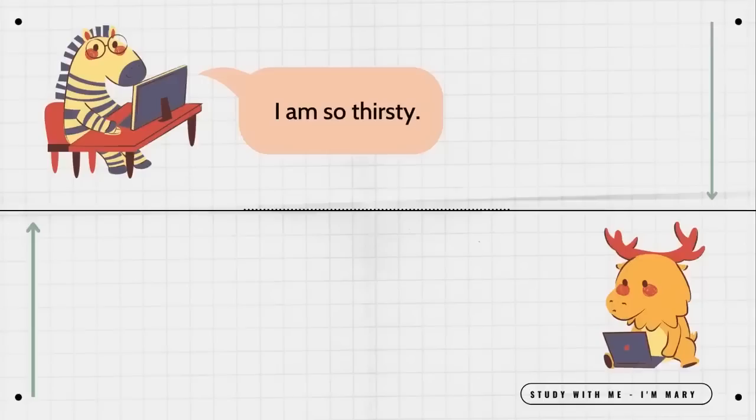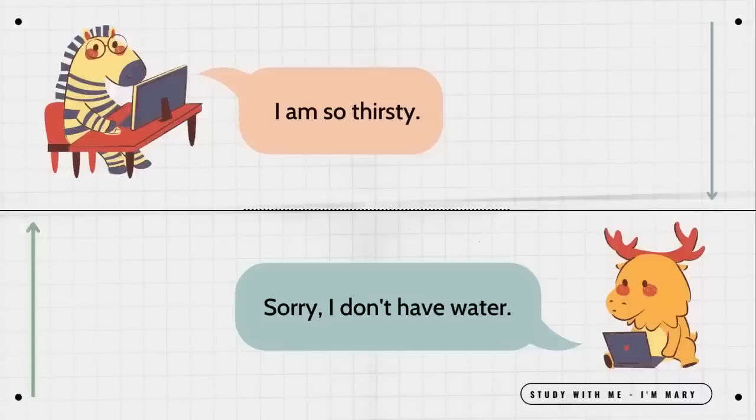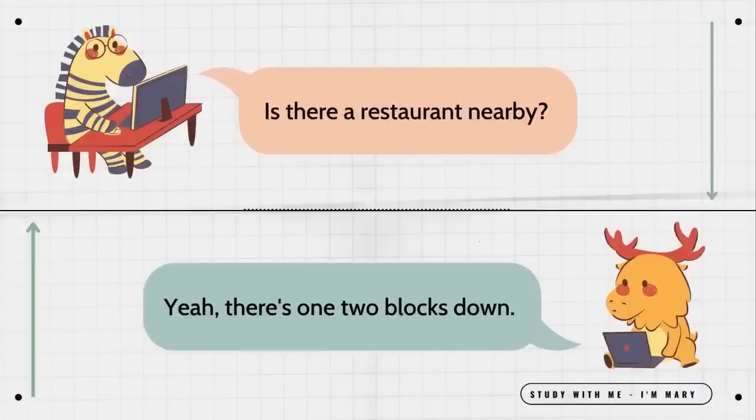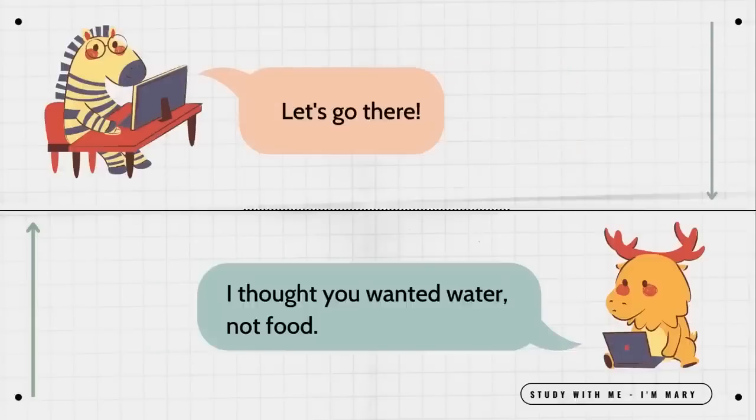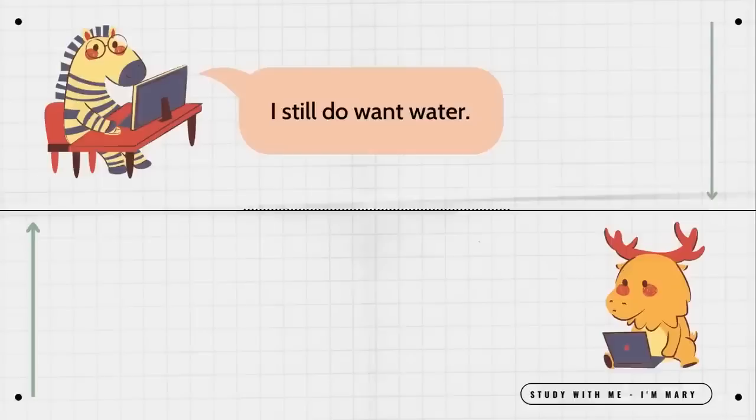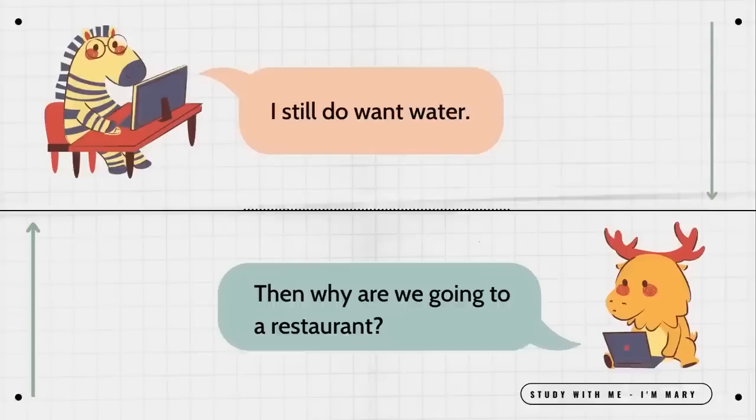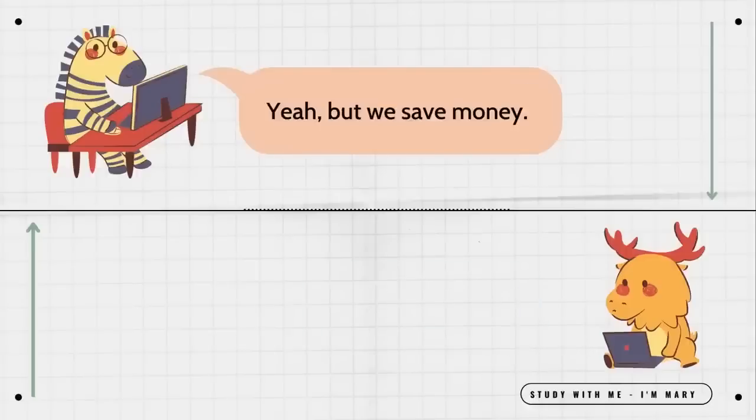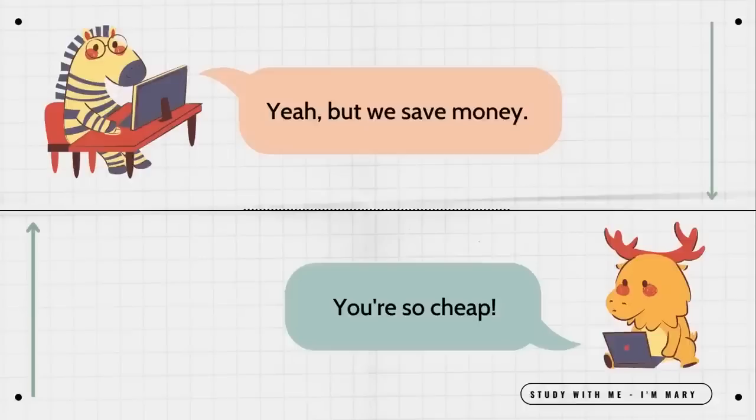I am so thirsty. Sorry, I don't have water. Is there a restaurant nearby? Yeah, there's one two blocks down. Let's go there. I thought you wanted water, not food. I still do want water. Then why are we going to a restaurant? We're going to get water for free and then leave. That is so rude. Yeah, but we save money. You're so cheap.